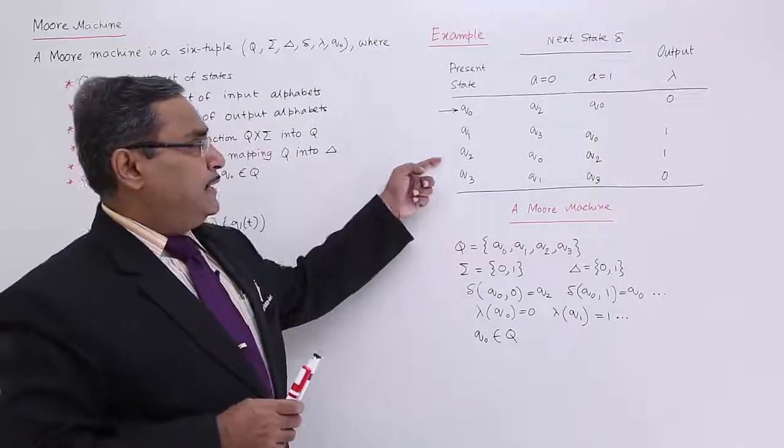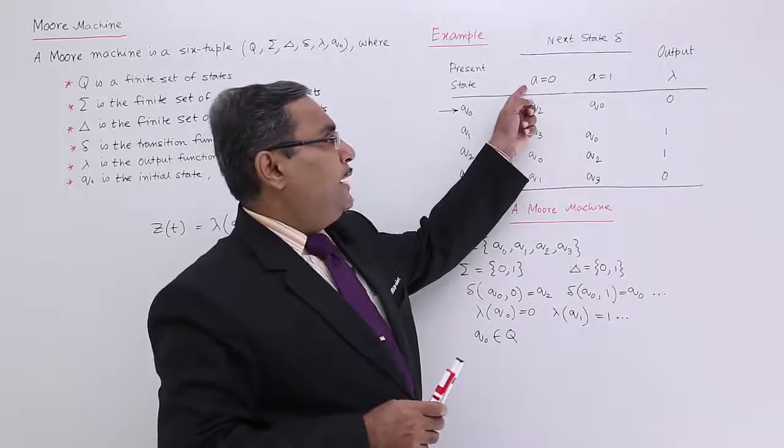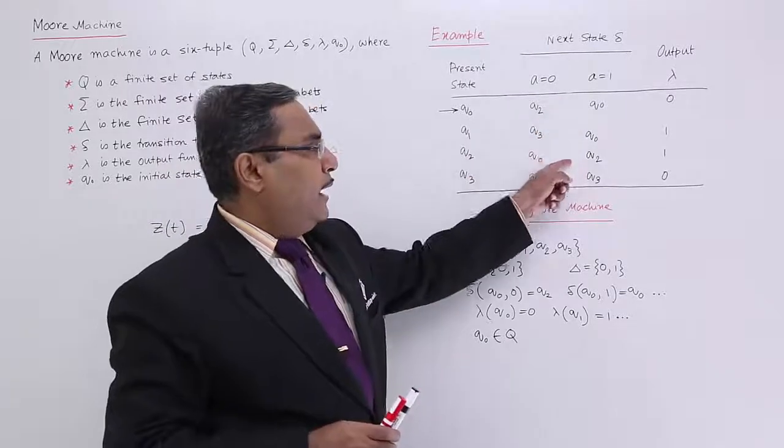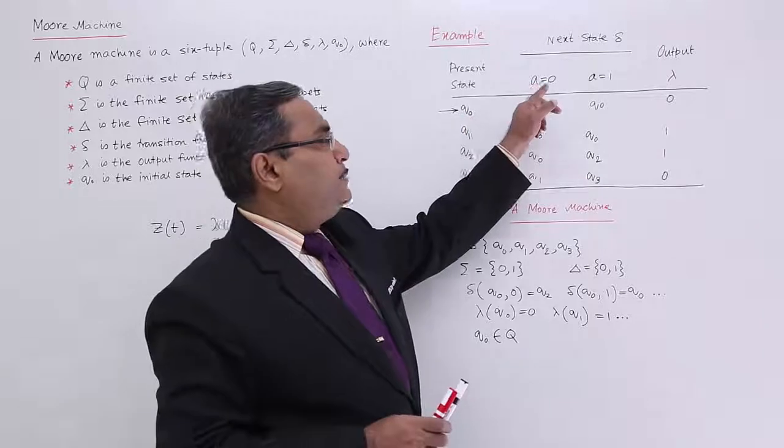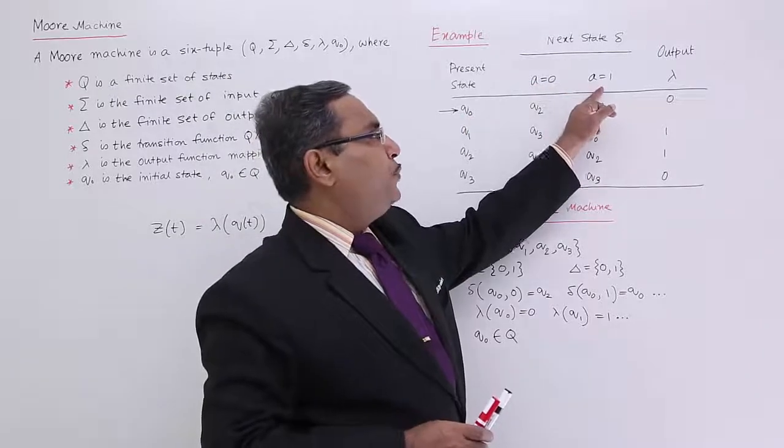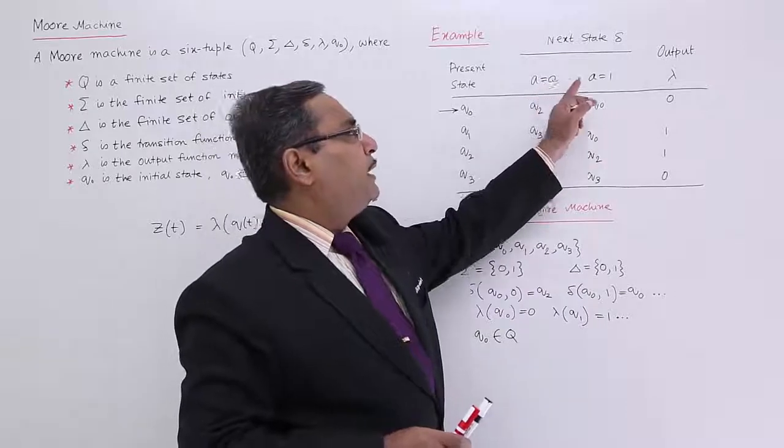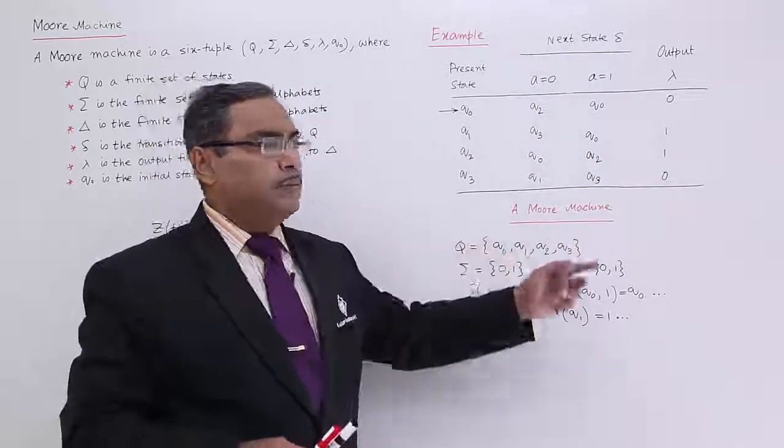We are having these present states, next states delta for input a equals 0 and for input a equals 1. These are the next states we are having and these are the outputs. Just consider for q0, irrespective of the current input, output will be 0. For q1, irrespective of the current input, output will be 1, and that is the basic thing in case of Moore machine.